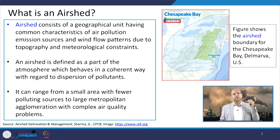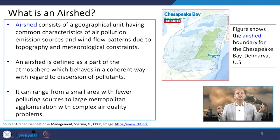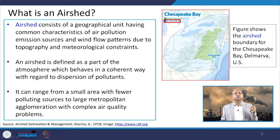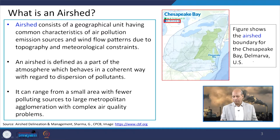An air shed can be defined as a part of the atmosphere which behaves in a coherent way. It will have common characteristics with regard to the dispersion of pollutants, and certain ways of dispersion and dilution because of meteorological factors. It can range from a small area with fewer polluting sources to a large metropolitan agglomeration with complex air quality problems. For example, this figure shows the air shed boundary for the Chesapeake Bay in the United States.